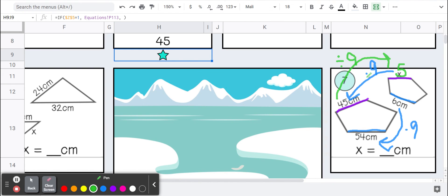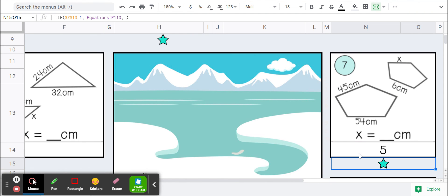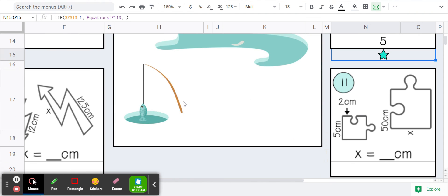5 times 9 is 45. So if we type our answer, we get a star. And for every star, something is going to be added to this picture.